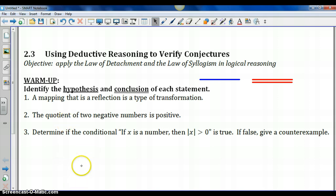Alright, in the first two we are supposed to underline the hypothesis and double underline the conclusion. Number one, a mapping that is a reflection is a type of transformation. We could word this: if a mapping is a reflection, then it is a type of transformation. So our hypothesis is the first part of the sentence, a mapping that is a reflection. Then the conclusion would be is a type of transformation.